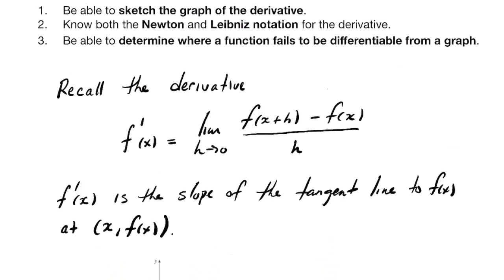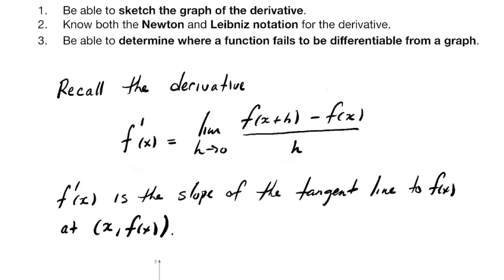Let's start by recalling the limit definition of the derivative — it's the limit of this difference quotient. I think of this as the change in f over the change in x, so it's the slope. f prime of x is the slope of the tangent line to the graph of a function, and I'm no longer specifying f of a because I want to think of this derivative itself as a function.